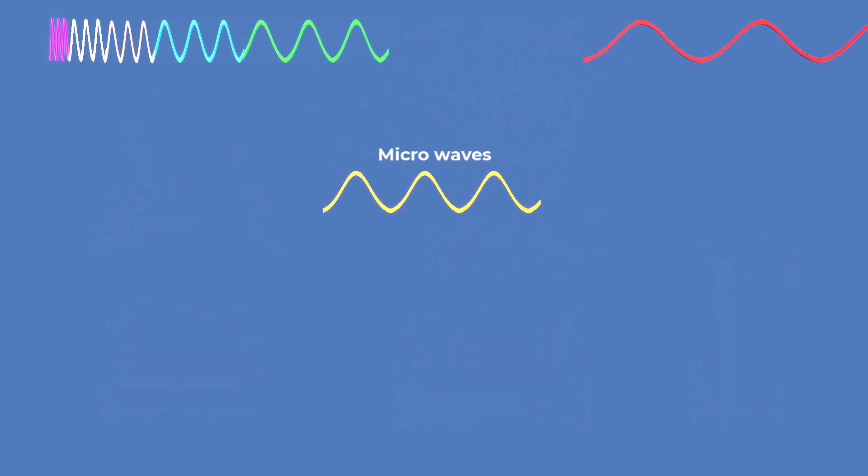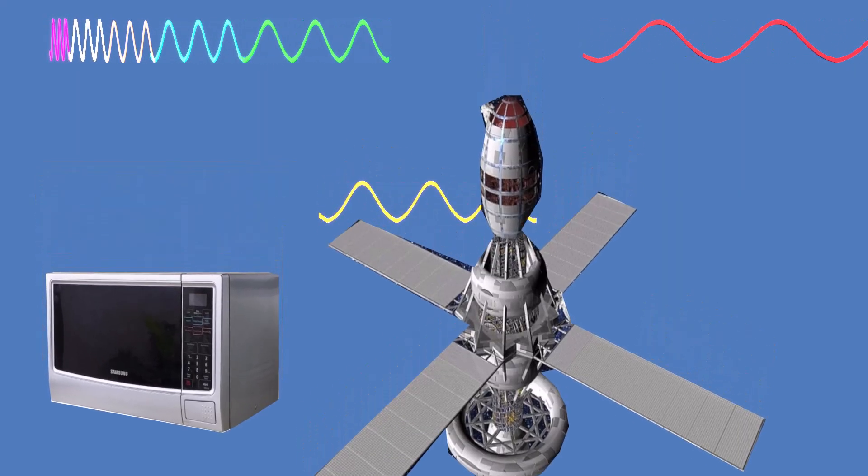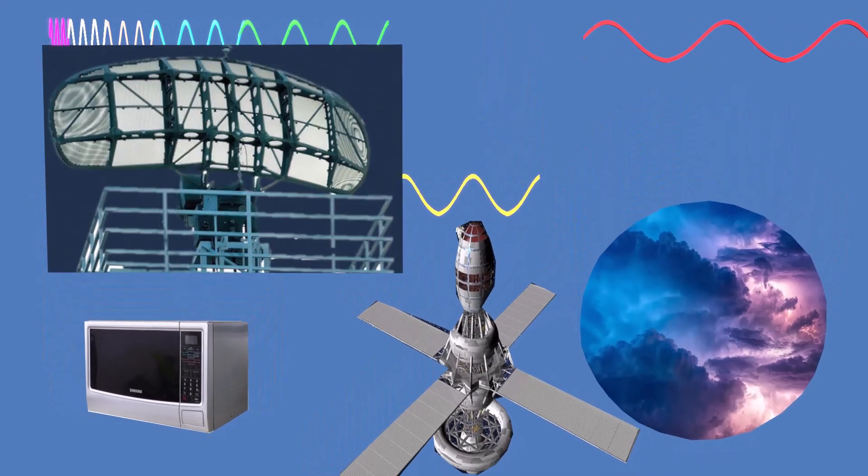Microwaves have shorter wavelengths and are widely used in microwave ovens, satellite communication, weather forecasting, and radar.